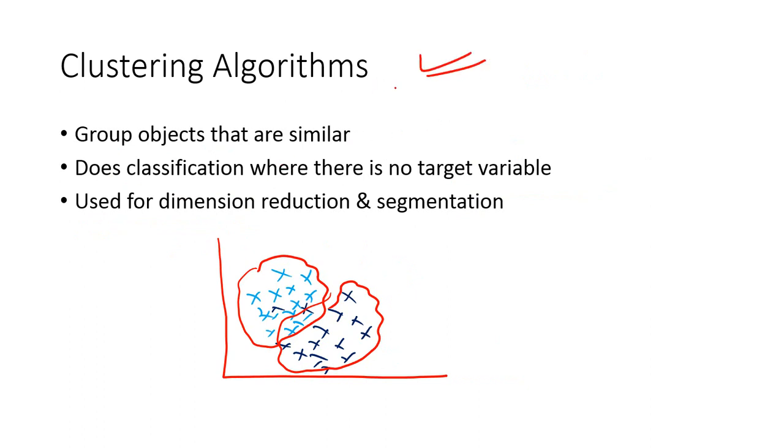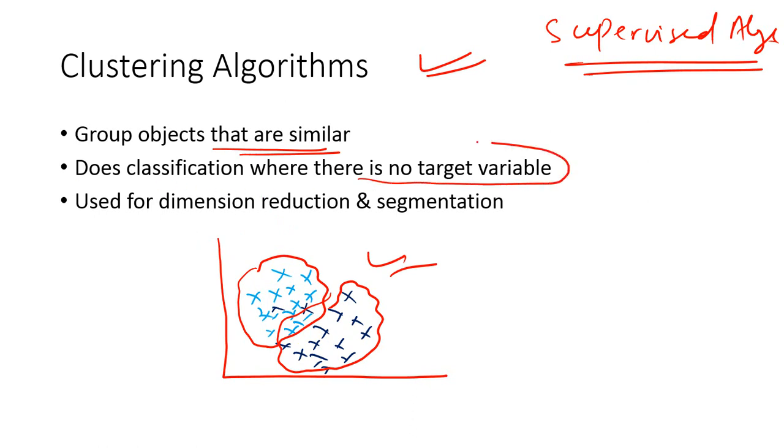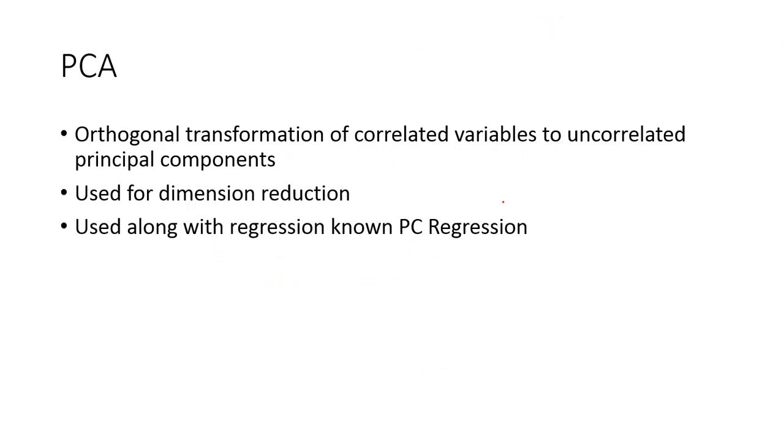The next one is the clustering algorithms. So far what we have seen can be considered as supervised learning algorithms because you have a target variable in whatever algorithm we learned. But for clustering algorithms, this is purely unsupervised learning which doesn't use a target variable for classification. What it does is it groups objects into different types - similar objects to be one type. If you can see in the picture, you can see the cross marks of different colors. A clustering algorithm will group the similar looking data points or variables. It does classification where there is no target variable and that's important to note. It is used for dimension reduction and segmentation purpose.